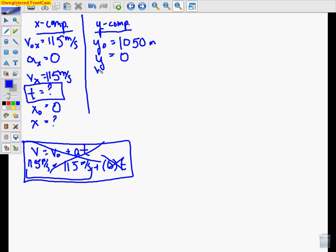We also know the initial velocity in the Y direction. Since the plane was only moving horizontally when the package was dropped, then there was no initial vertical velocity. We also know AY. That's going to be the acceleration due to gravity, negative 9.8 meters per second squared because it's downward. And then we don't know VY, but maybe we don't need it. And we don't know T. That's what we're looking for.